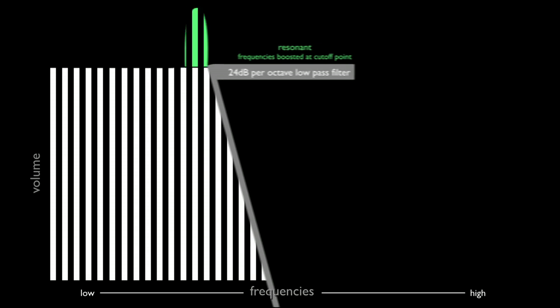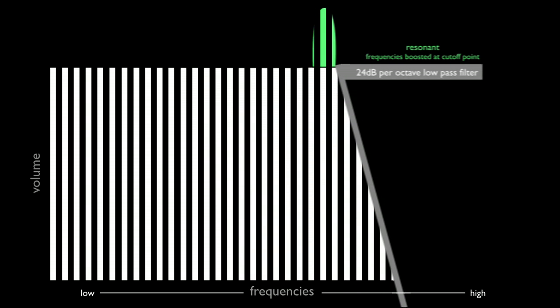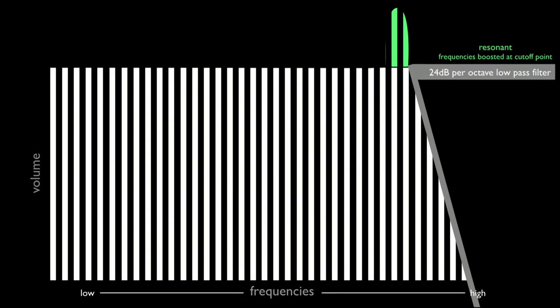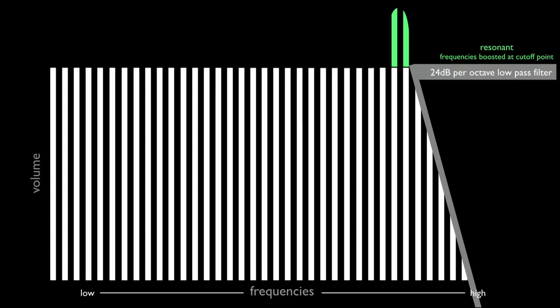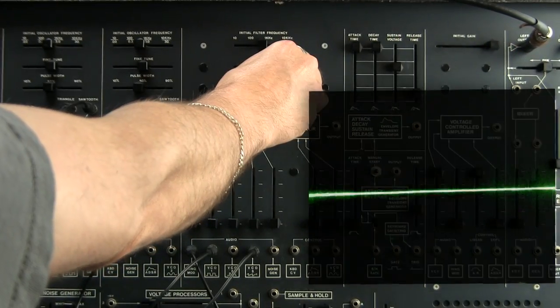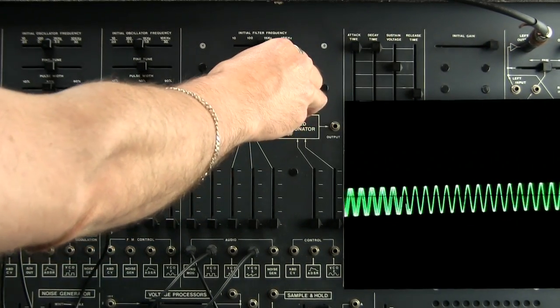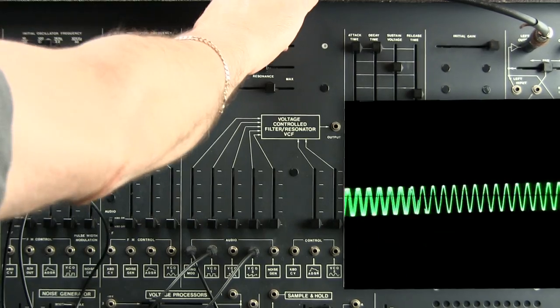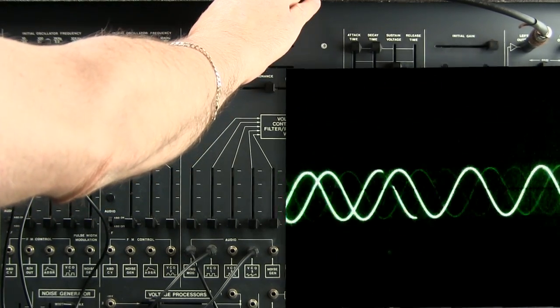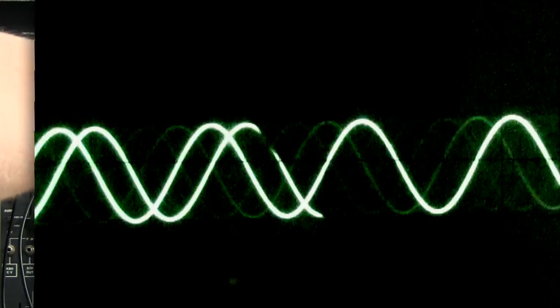When the cutoff point is varied by control voltage, this frequency boost moves through the frequencies present along with the cutoff point. If the resonance is boosted enough, the filter will resonate, which results in it going into self-oscillation and producing a frequency-tunable sine wave.